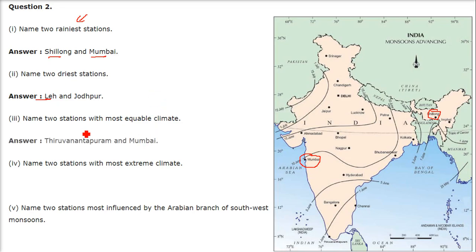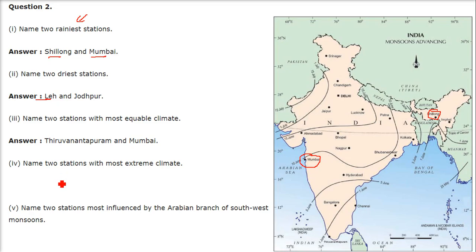Name two stations with most equable climate — equable climate means Samjalvayu, where there is a lot of moderation in seasons or temperatures. Thiruvananthapuram and Mumbai are the two places with most equable climate.